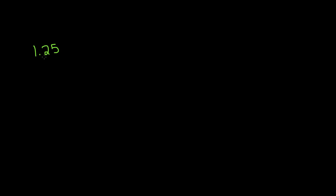Now let's do another example. Let's say that we have the decimal number 1.25. In this case, we have a whole number and we have the decimal digits — one in the tenths place and one in the hundredths place. Whenever you have a whole number in front of your decimal, we are going to have a mixed number.